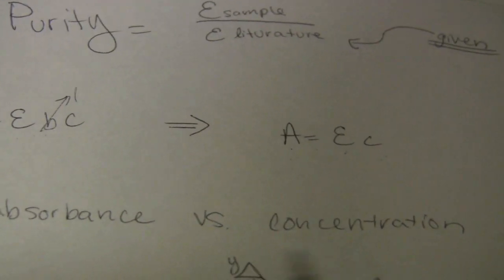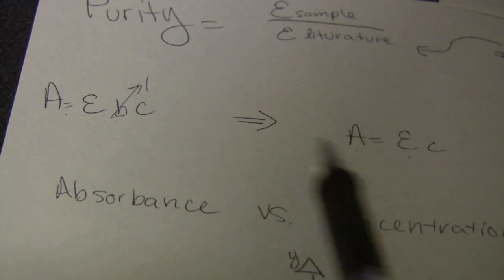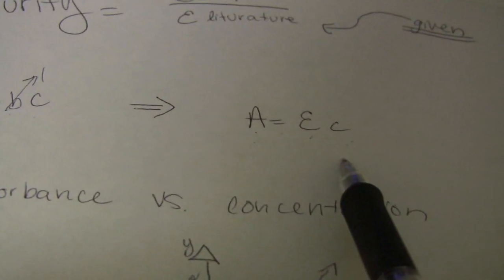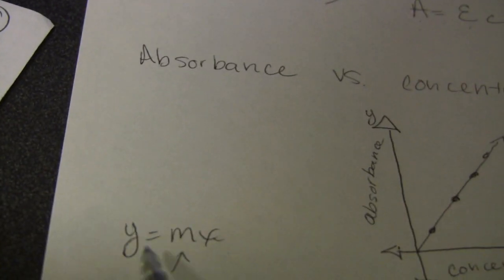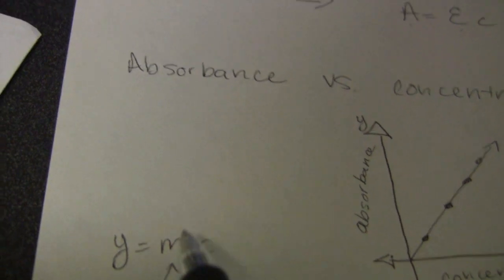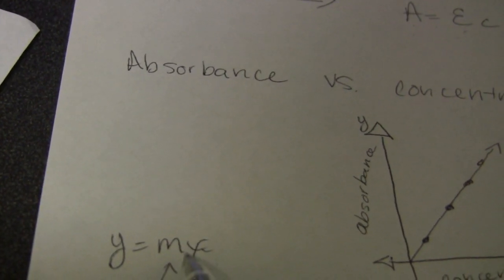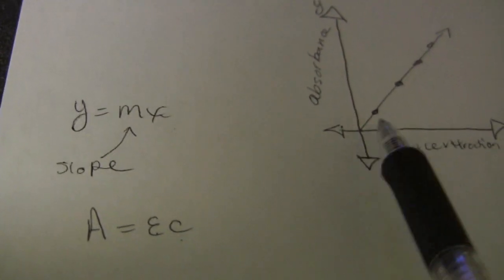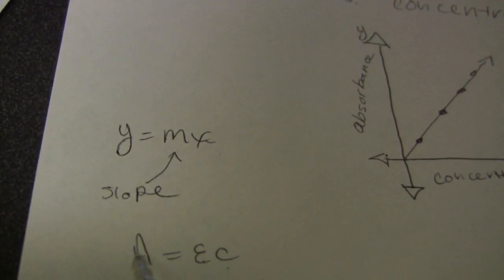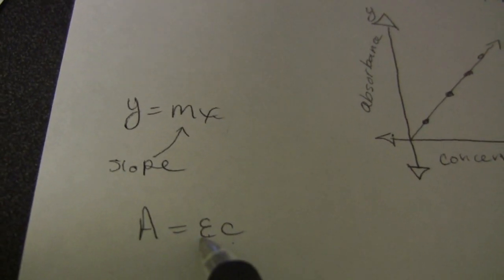Now if we plotted this on a graph, absorbance versus concentration, we see that the molar extinction coefficient is a relationship between these two, just like the linear graph equation y equals mx, the slope m is a relationship between the two. Therefore the slope of this graph would be the molar extinction coefficient.